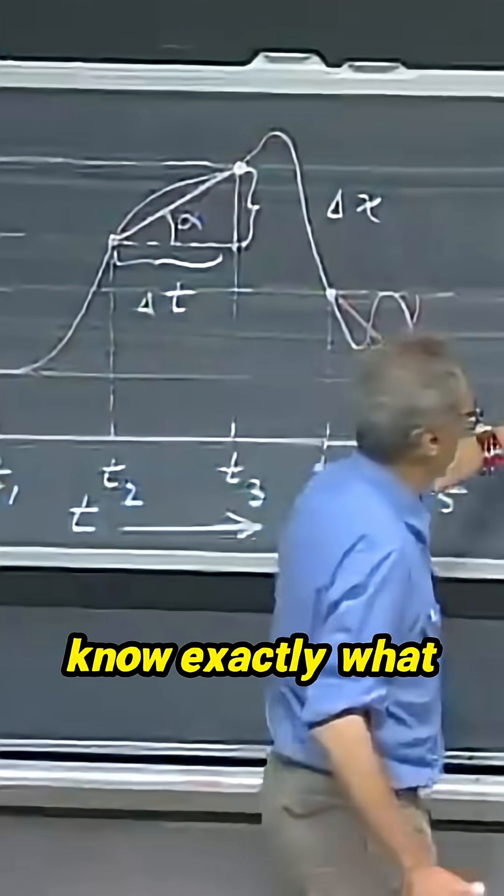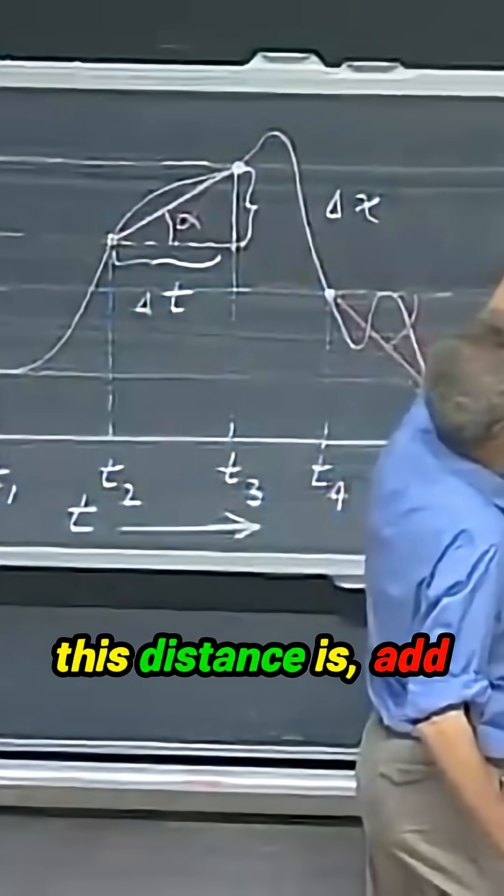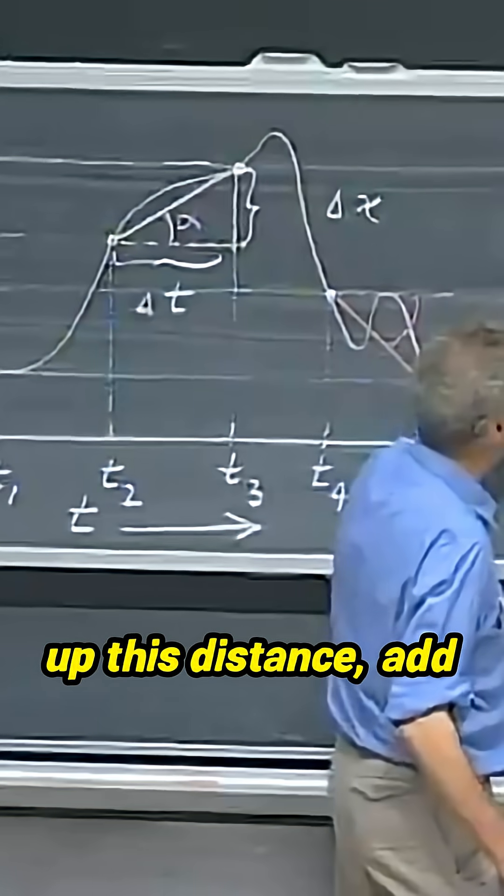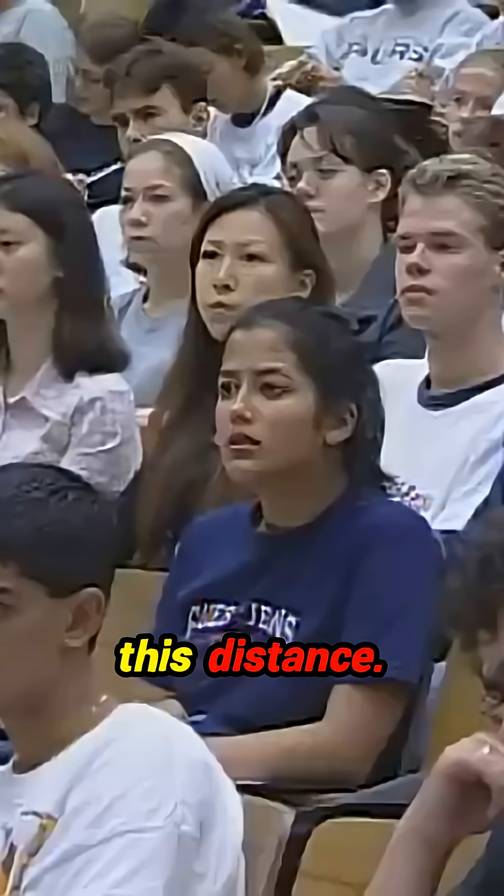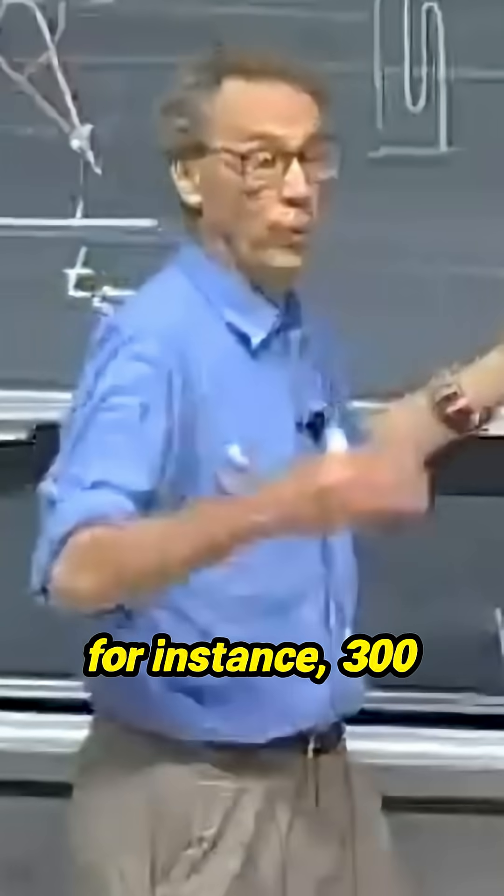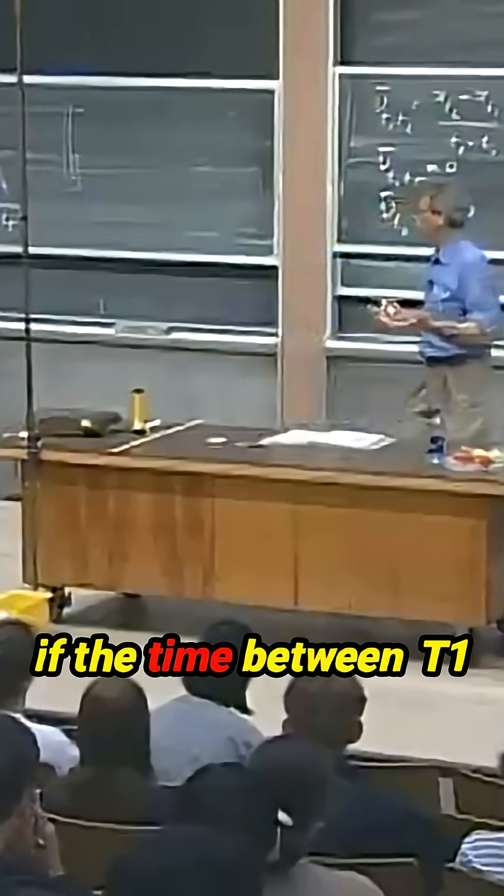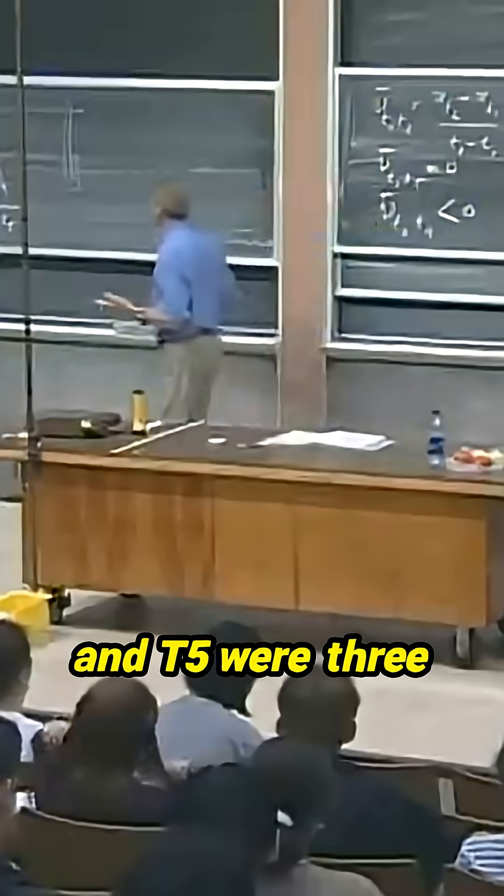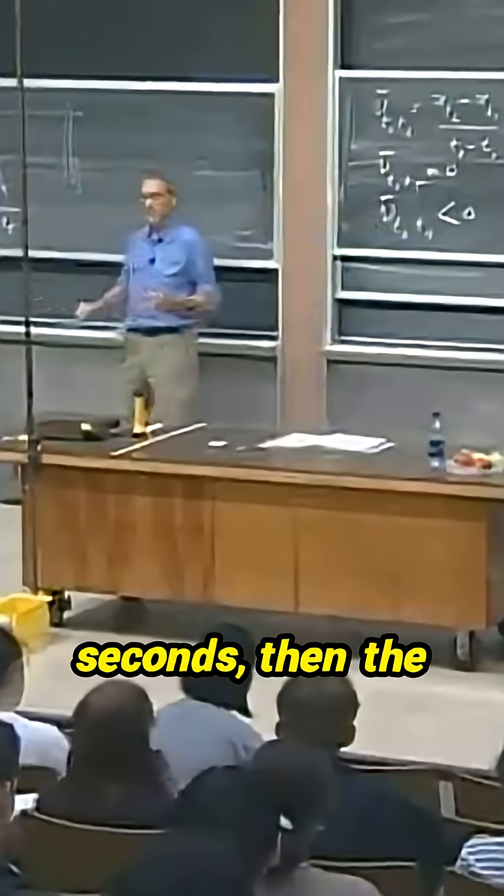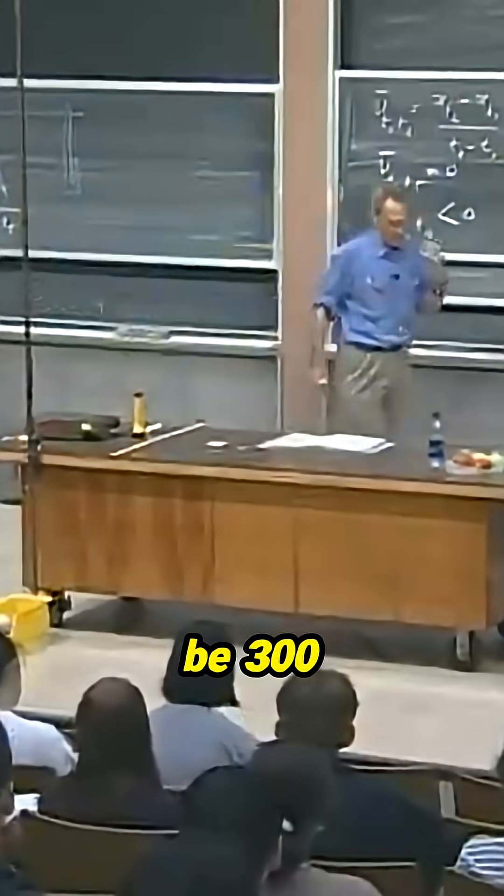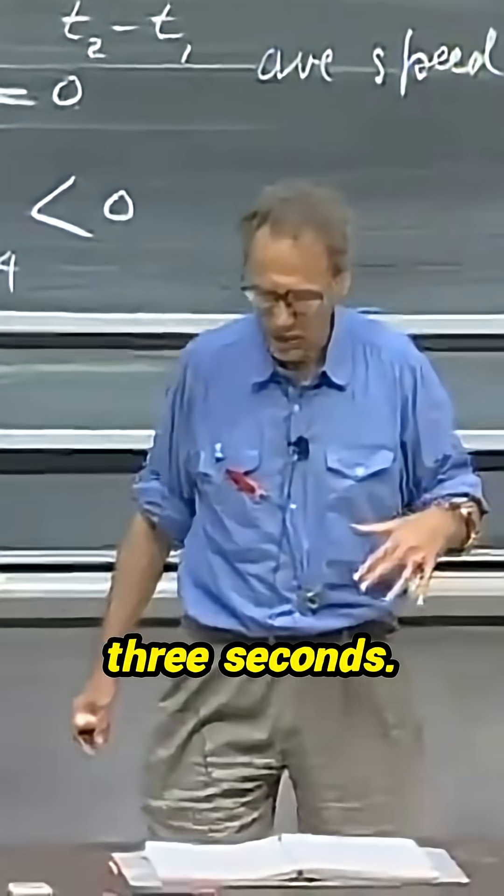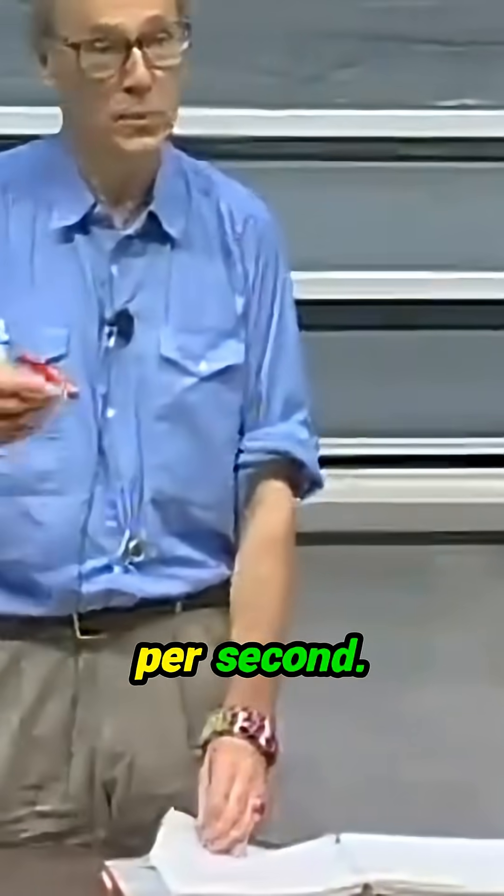you would now have to know exactly what this distance is, add up this distance, add up this distance, and this distance. And if that distance altogether were, for instance, 300 meters, and if the time between t1 and t5 were three seconds, then the average speed would be 300 meters divided by three seconds. That would be 100 meters per second.